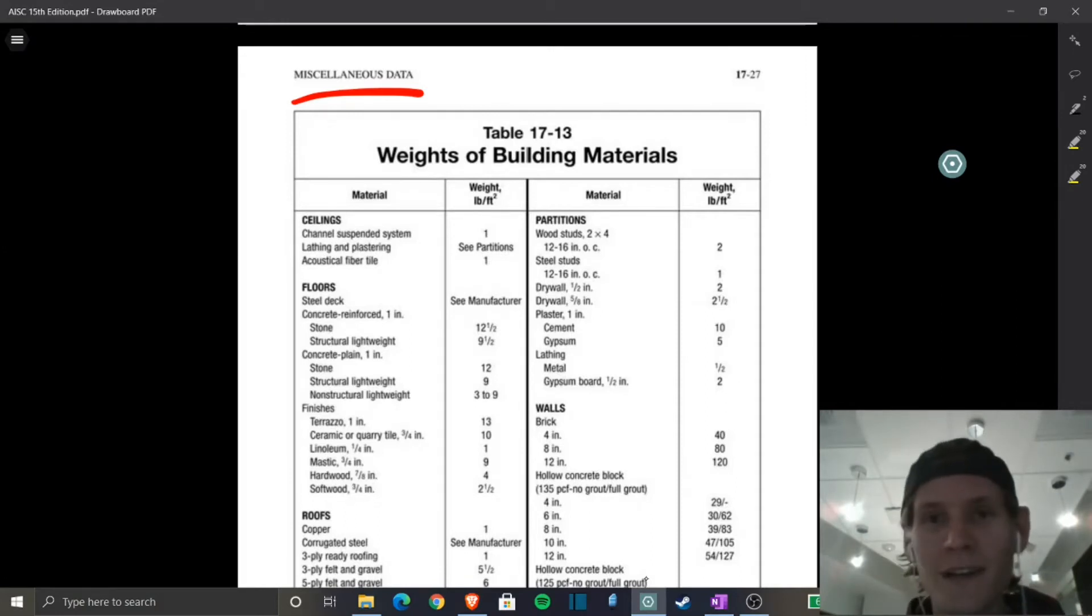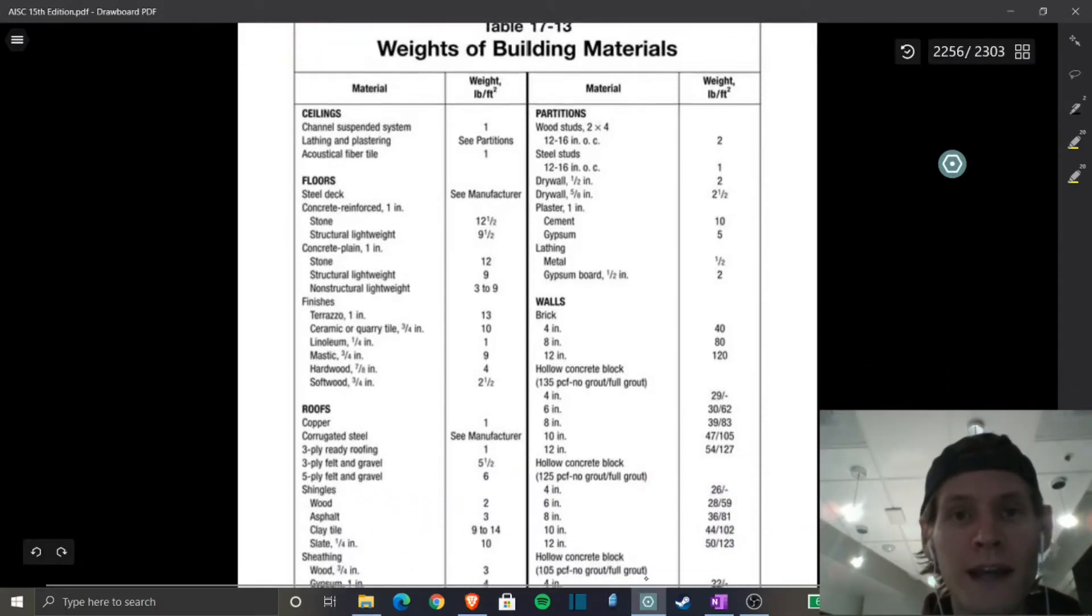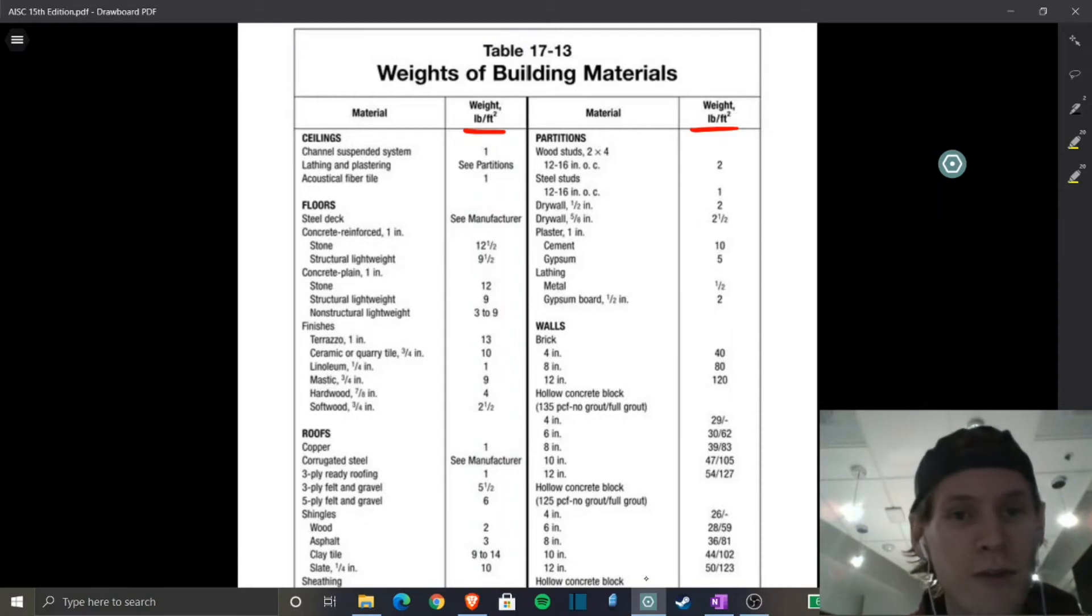It's weights of building materials. Boy, that's pretty handy. Yeah. This book has freaking everything. You just need to go looking for it. There's like 2,000 pages. So let's pull our weights. You can see they're defined in PSF, pounds per square foot. And that's perfect for us.